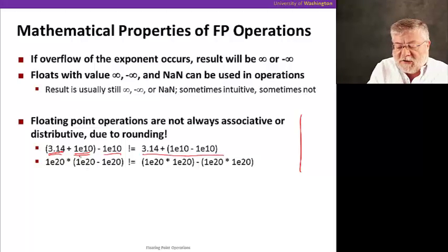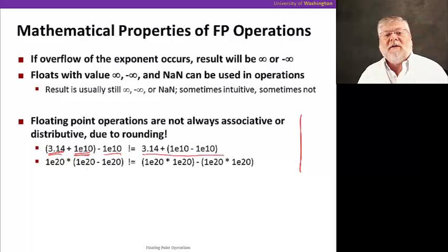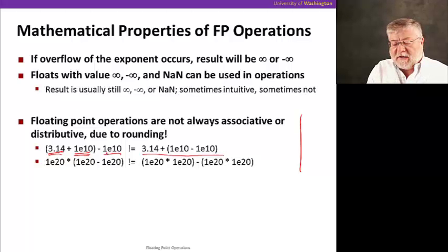In other words, because we have to represent this large number, we end up taking up all of the significant bits. And adding on a 3.14 in this case just doesn't register in the 23 bits we have available. So that when we go and subtract that large number again, we're going to just get zero.